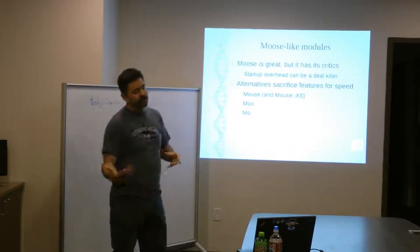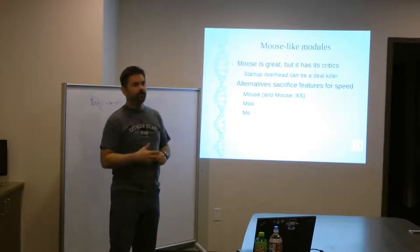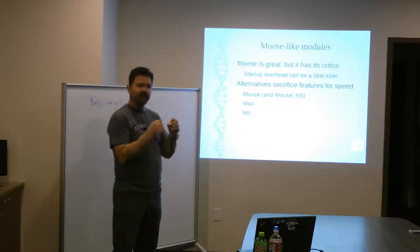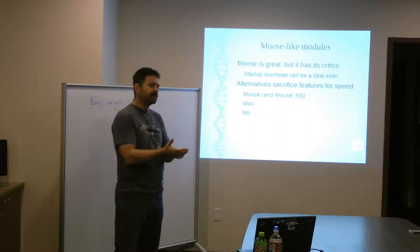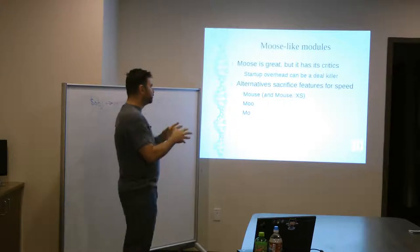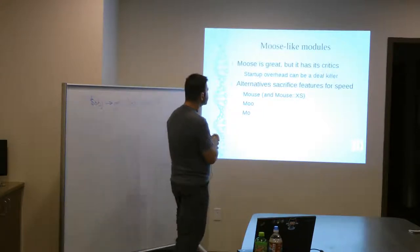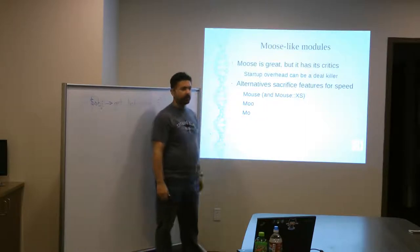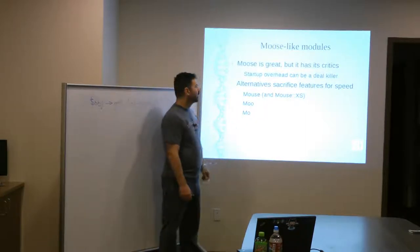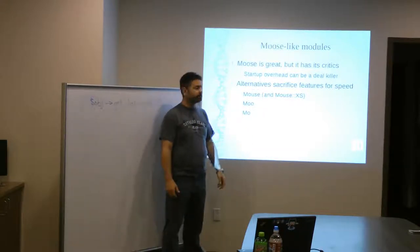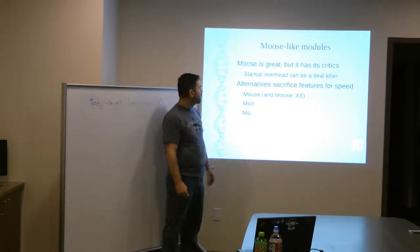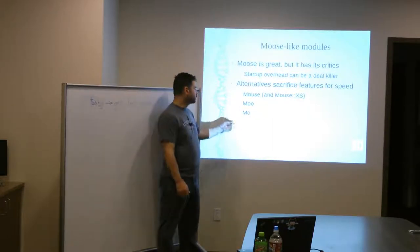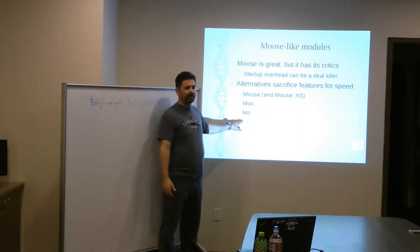Okay, so Moose-like modules. As I mentioned before, there is some startup overhead. So what some people have said is, well, you know, what can we do to make Moose a little leaner? Make it a little skinnier and less bulky on the system, especially for startup. So there have been some alternatives that have been written. Mouse. There's a Mouse XS, which is pretty fast. Moo and Mo. There's even one called M. But I don't think it's very useful.